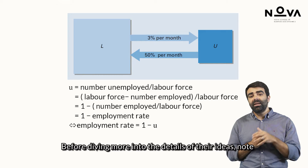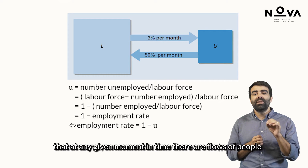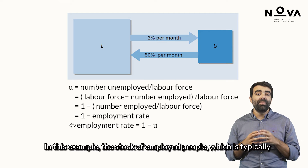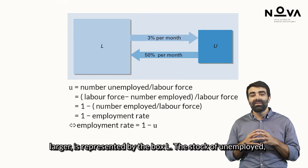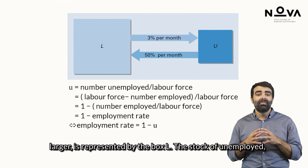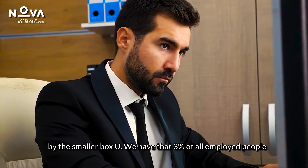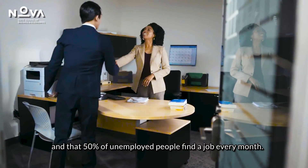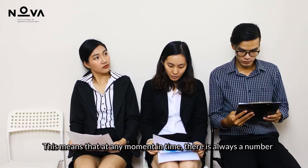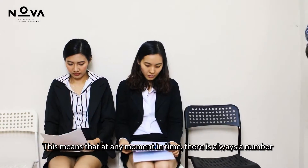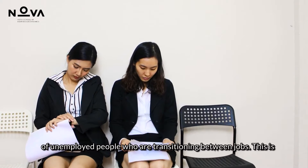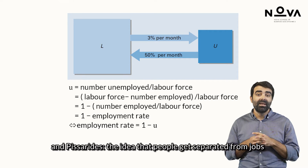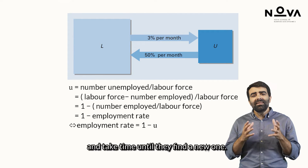At any given moment in time there are flows of people into and out of employment. In this example, the stock of employed people, which is typically larger, is represented by the box L. The stock of unemployed by the smaller box U. We have that 3% of all employed people lose or quit their jobs every month, and that 50% of unemployed people find a job every month. This means that at any moment in time there is always a number of unemployed people who are transitioning between jobs. This is at the core of the search frictions analyzed by Diamond, Mortensen and Pissarides — the idea that people get separated from jobs and take time until they find a new one.